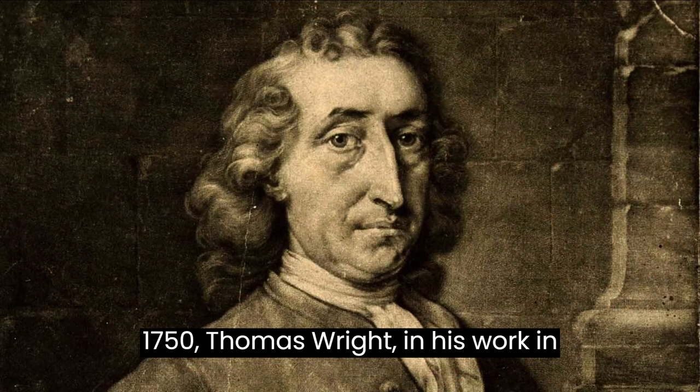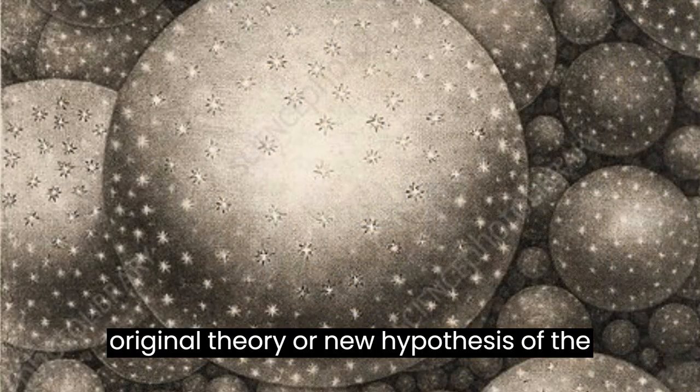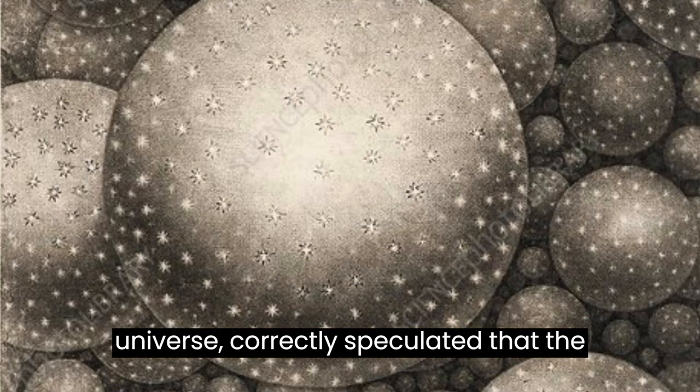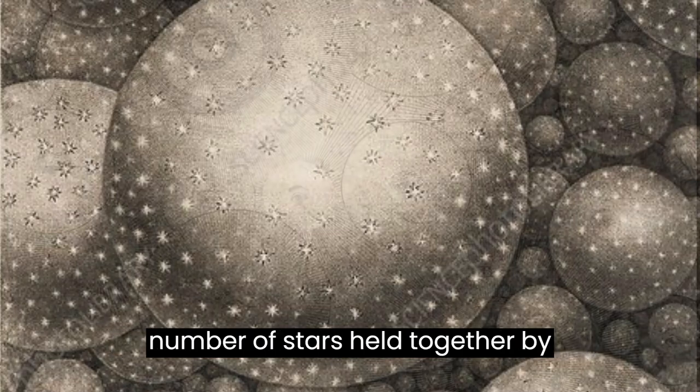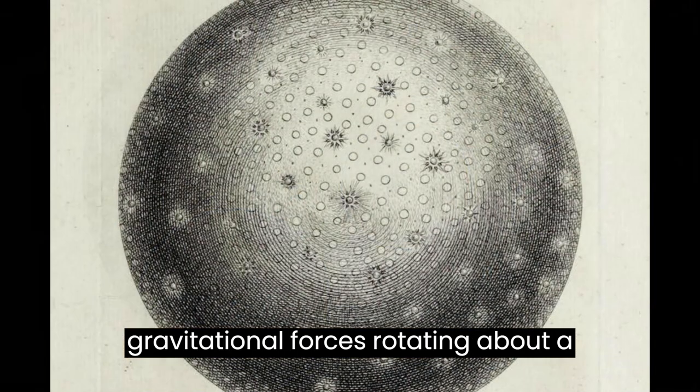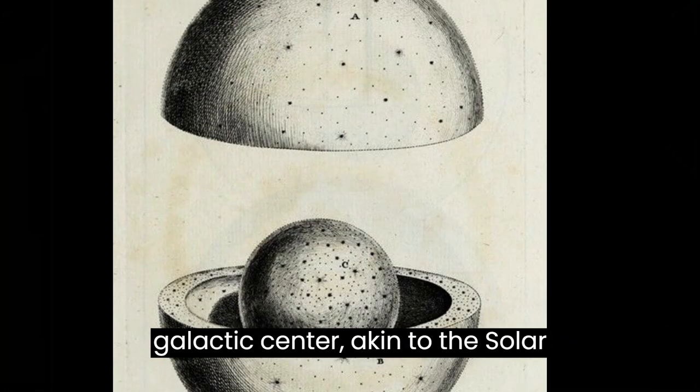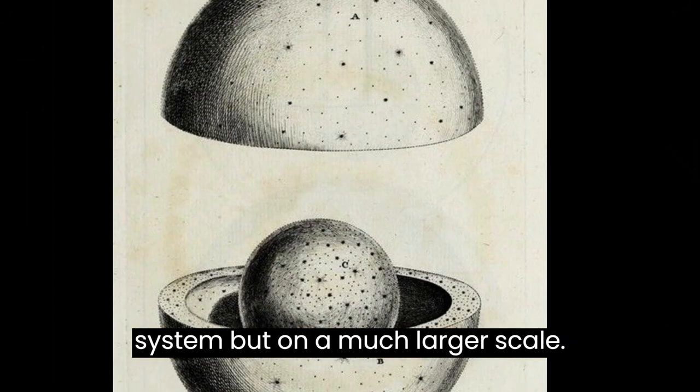In 1750 Thomas Wright, in his work An Original Theory or New Hypothesis of the Universe, correctly speculated that the Milky Way might be a body of a huge number of stars held together by gravitational forces rotating about a galactic center, akin to the solar system but on a much larger scale.